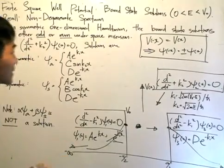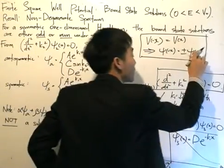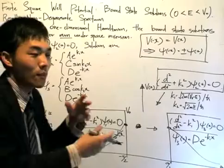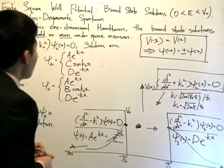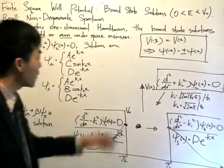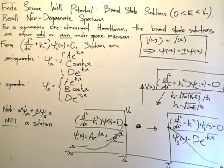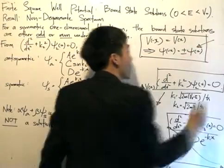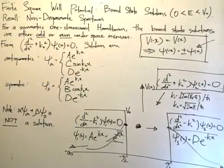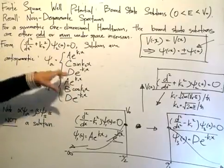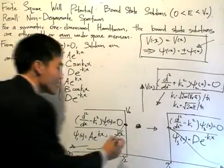If psi(-x) equals plus psi(x), that's an even function. If psi(-x) equals minus psi(x), the function is odd. So writing the solutions to the Schrödinger equation inside the well, from -a/2 to a/2, I have grouped them into an antisymmetric solution given by psi_a proportional to sine(k2x) — an odd function as given by the theorem — and a symmetric solution psi_s given by a cosine function. These solutions, multiplied by a constant, apply only inside the well.